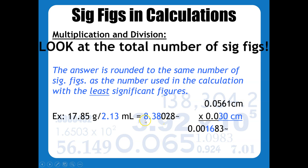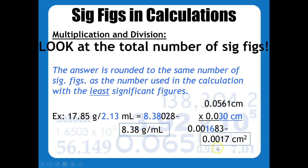So this should be 8.38 because there's a zero to the right. For this multiplication example, be careful — there are leading zeros, and remember they're never significant. So 5.61 has three sig figs. This other number has leading zeros which are never significant, but it also has a trailing zero — and since there's a decimal point, that trailing zero is significant. Therefore this number has two sig figs, so the answer can only have two sig figs.